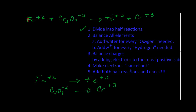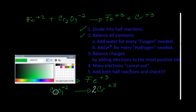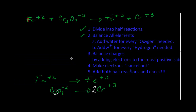We have divided into half-reactions. Our second step is to balance all the elements. We will check for iron — in the first half-reaction we have one iron on the reactant side and one iron after, so that's balanced. In the second half-reaction, we have two chromium on the reactant side, so I need a two in front of Cr to make them balance.